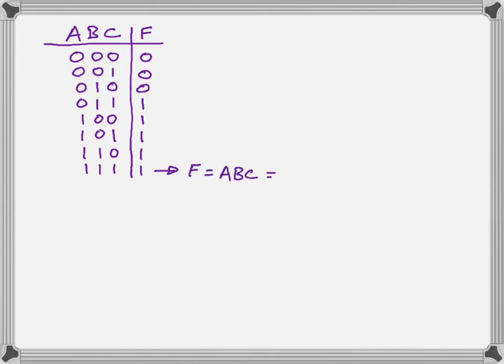Now it's clear that on the last line, if we use an AND function, we can see that A, B, and C are one and we get a one output. So we can see for the last row, F equals ABC equals one.